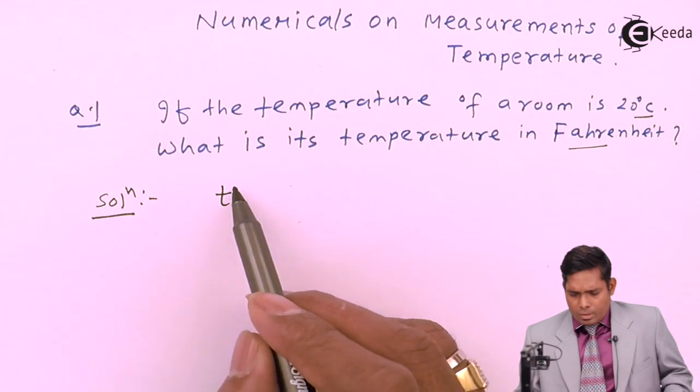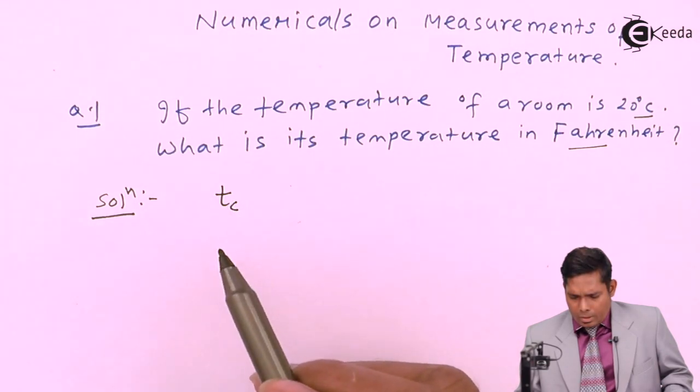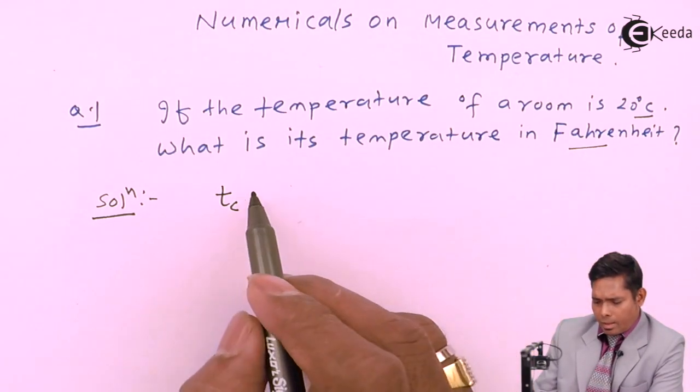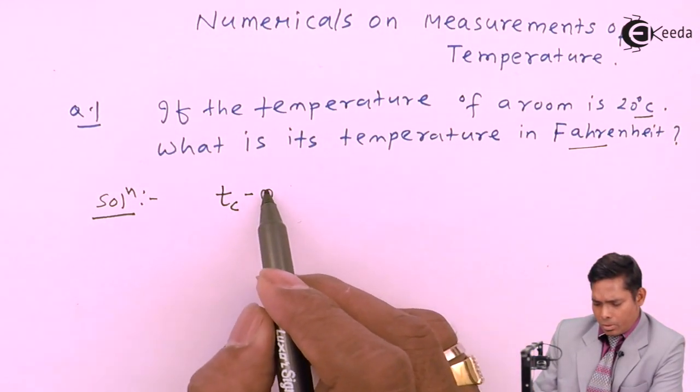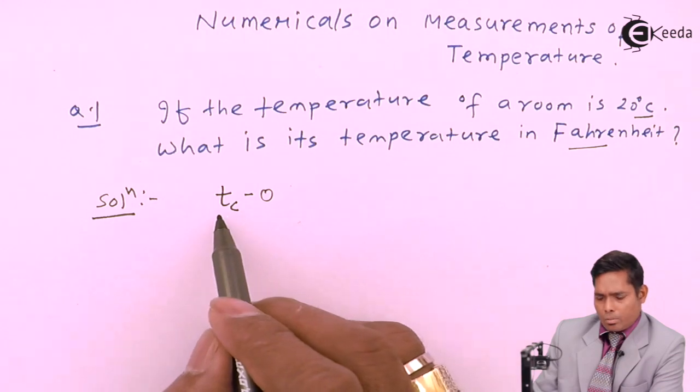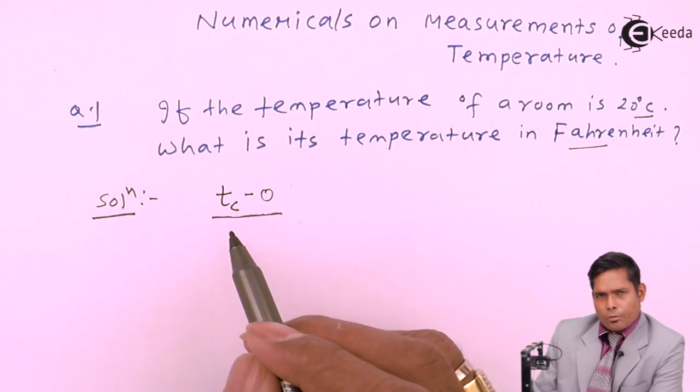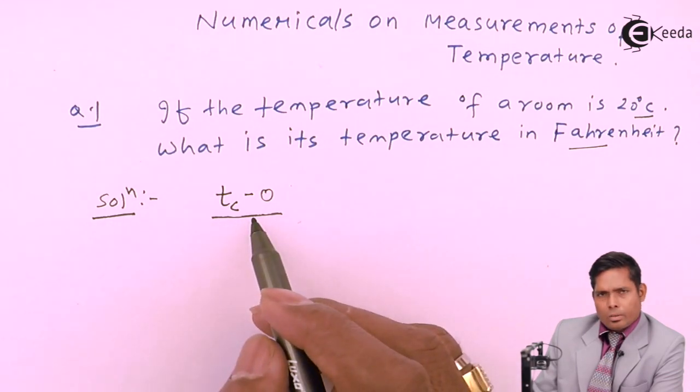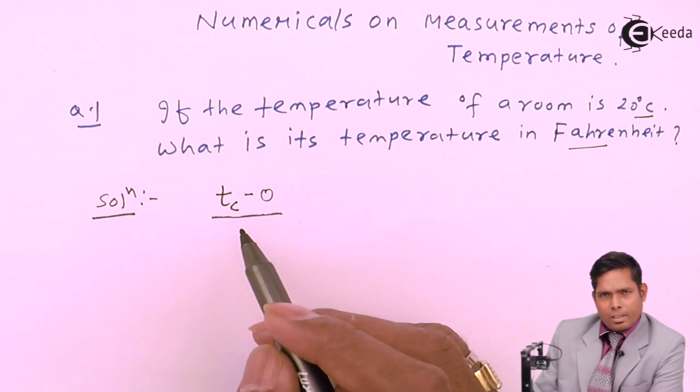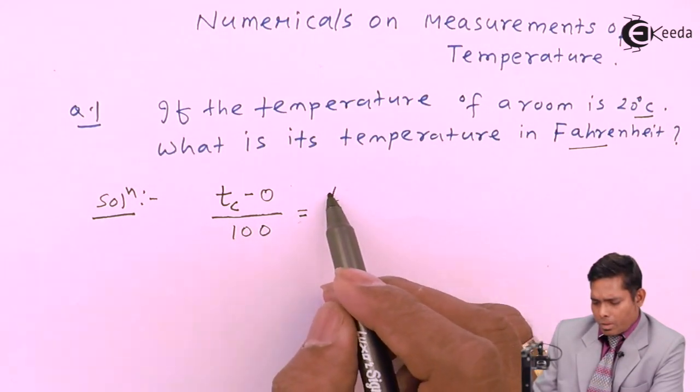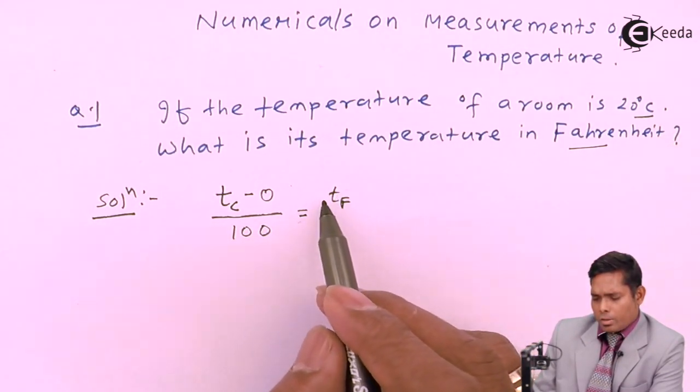The temperature in centigrade scale and the temperature in Fahrenheit scale are related like this: tc minus zero, the lower temperature that is measured, divided by the total difference between the lower and upper reading that is possible in that scale of degree centigrade, that is 100.